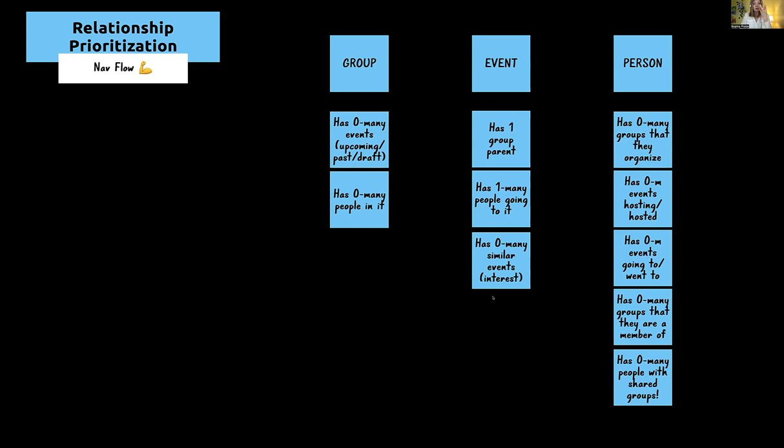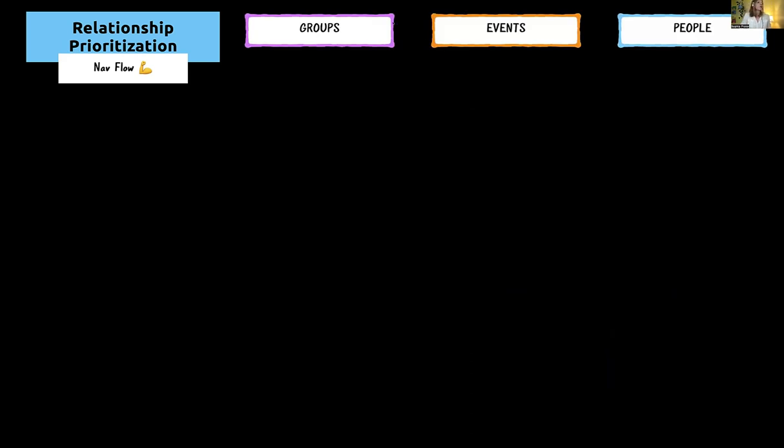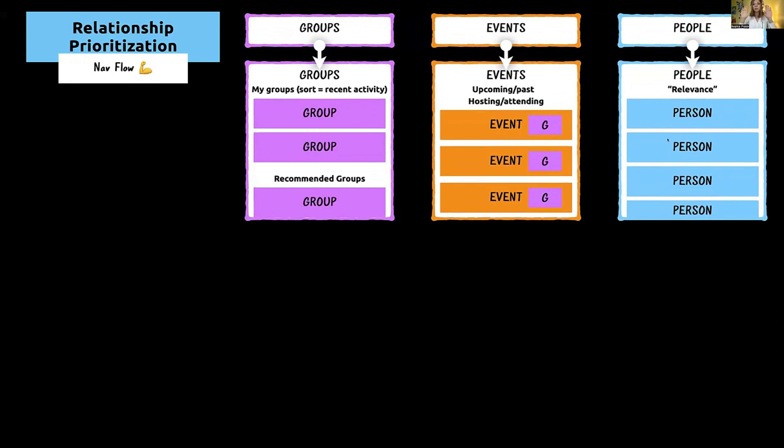Once we prioritize and have a good grasp on them, we can start visualizing through the navigation flow. For the nav flow, we think about top navigation — the way I usually start is by thinking about the objects. I can look at the persistent navigation leading to main lists or landing pages. It's almost like a map. Groups, events, and people — even if you didn't know it was Meetup, you'd have an idea of what this is about. And those will usually go to some sort of list page.